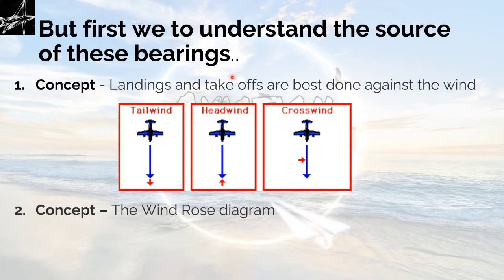But first we need to understand the source of these bearings. Concept 1: Landings and takeoffs are best done against the wind. This we have studied in a very detailed manner in the first part. To get a glimpse of it, we have 3 kinds of wind mentioned here: Tailwind, headwind, and crosswind. Tailwind is the wind which is in the same direction as the moving aircraft.